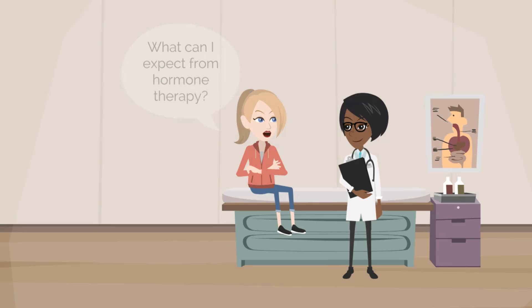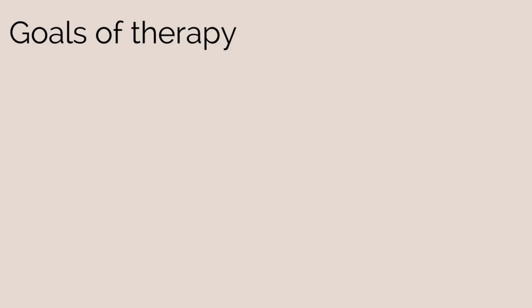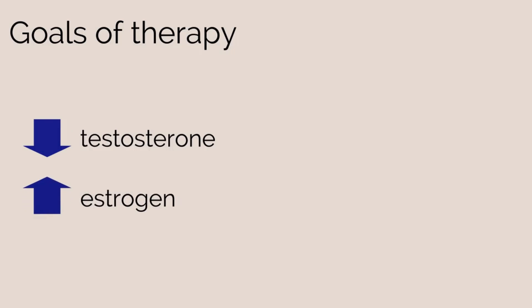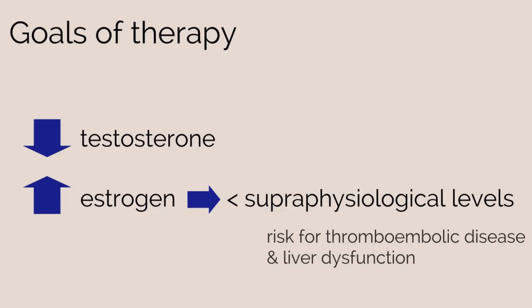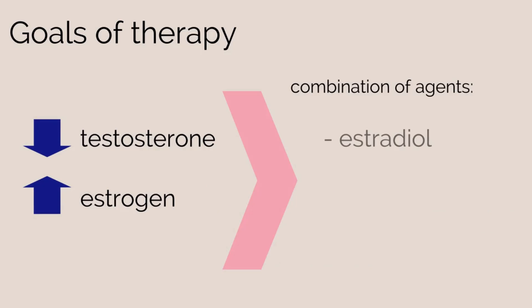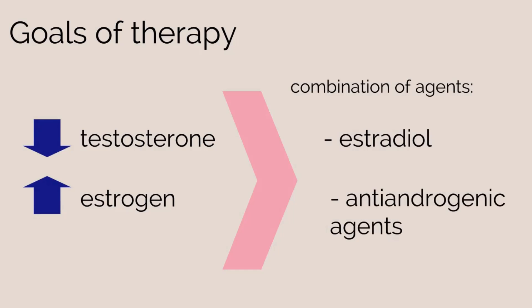Your patient would like to know what she can expect from hormone therapy. For our patient, the major goals of therapy are to decrease testosterone and increase estrogen to a female physiological range. It is important to maintain estrogen below supraphysiological levels, as supraphysiological levels increase risk for thromboembolic disease and liver dysfunction. For trans females, goals of therapy can be accomplished using a combination of estradiol as well as antiandrogenic agents.